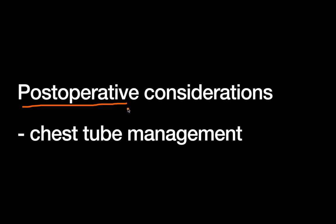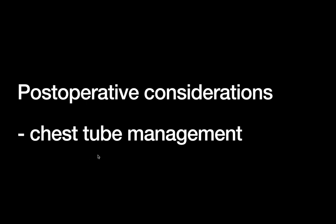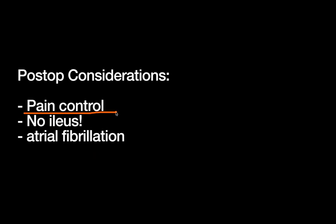Some postoperative considerations unique to the thoracic patient: first, patients will always come out with chest tubes. This prevents catastrophic postoperative pneumothorax, which can occur from lung injury during surgery or air leakage from staple lines, and clears out any postoperative hemothorax. Hemothorax typically comes from port site bleeding, so ensure excellent hemostasis at port sites before leaving the OR. Chest tubes also cause significant pain — some attendings describe it as getting stabbed in the side with a spear and having it left in when you wake up from surgery.